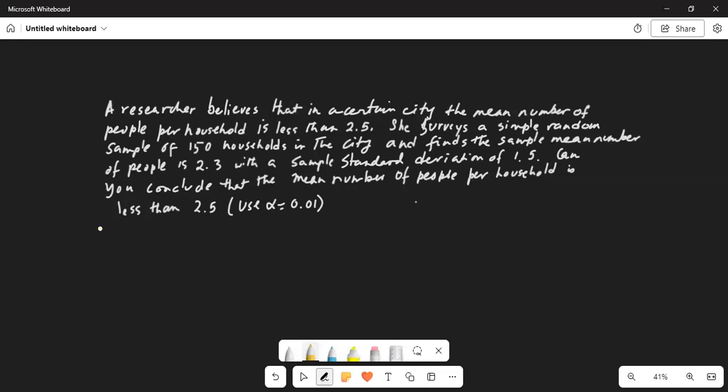Solution. We have to test for whether we have enough evidence to support the alternate that the mean number is less than 2.5. And the null hypothesis always contains the equal to sign, 2.5. What have we been given? Sample size n is equal to 150 and x bar is 2.3 with a sample standard deviation S is equal to 1.5.